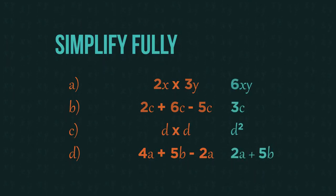How did you get on? For the first one, we just do 2 multiplied by 3 is 6, and remove the multiplication sign, so we get 6xy.